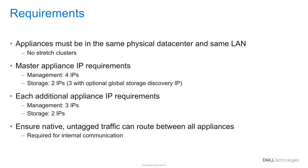Lastly, all appliances within the same cluster must be in the same data center and on the same local area network to ensure low latency communication between the appliances. When creating a multi-appliance cluster during the Initial Configuration Wizard, the master appliance will require four management network IPs and two storage network IPs. Optionally, a third storage network IP can be used as a global storage discovery IP address. Every additional appliance included in the cluster will require an additional three management IPs and two storage IPs.